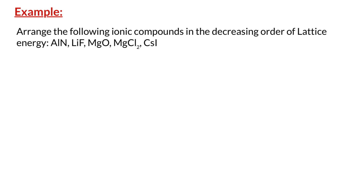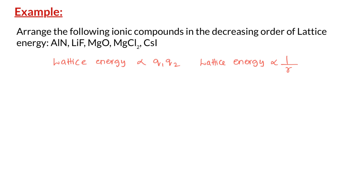Let us do an example problem: arrange the following ionic compounds in decreasing order of lattice energy — AlN, LiF, MgO, MgCl2, and CsI. We know that two factors influence lattice energy: first, the charge on the cation and anion; second, the sum of the ionic radii of the cation and anion. Since charges have a greater effect on lattice energy, I will arrange these compounds based on charges first — greater charges mean higher lattice energy.